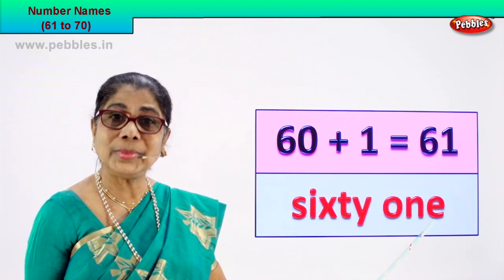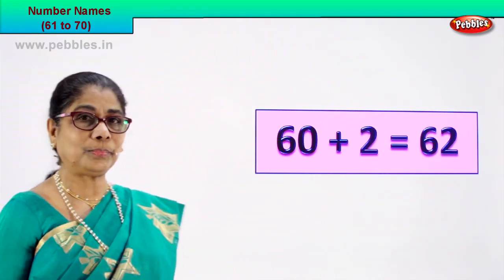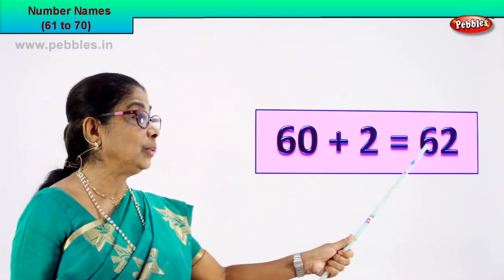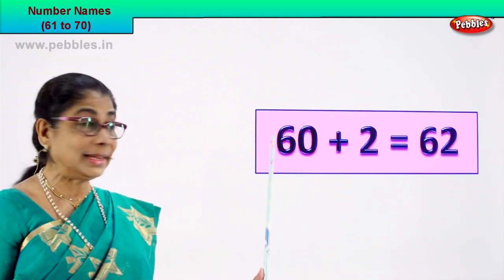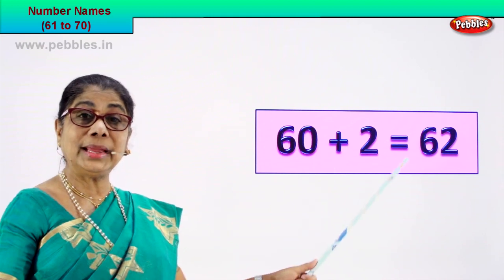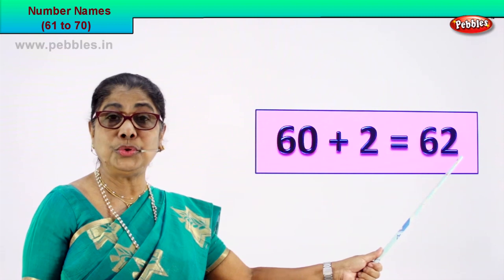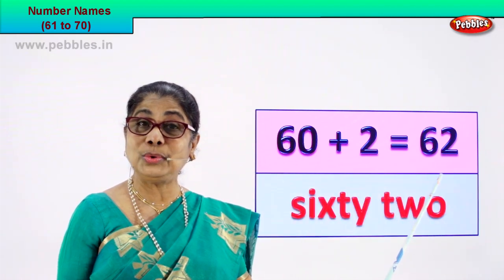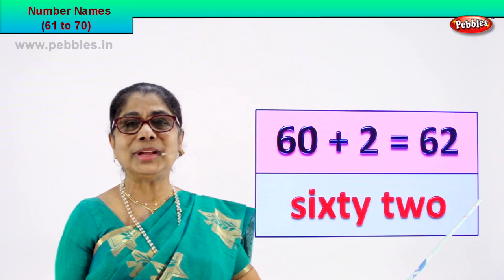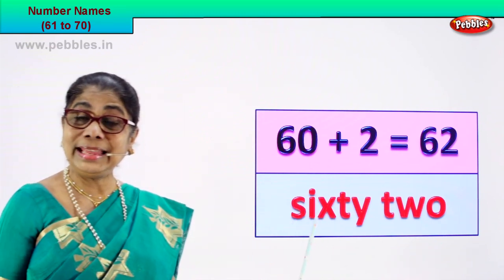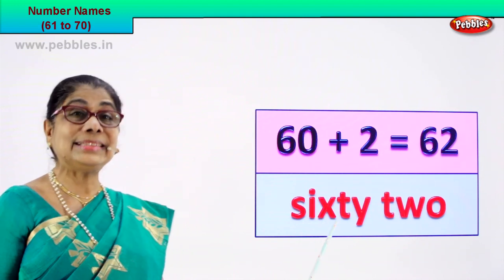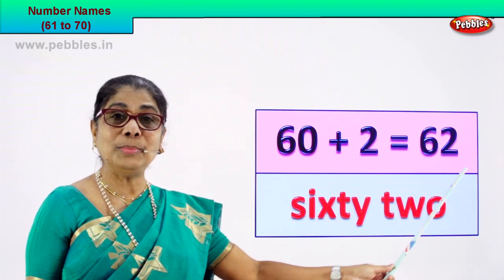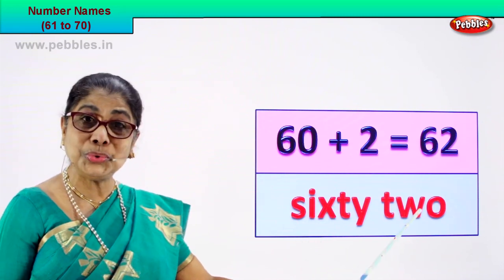Shall we take the next number and learn the number name? Look! 60 plus 2 is equal to 62. 6 and 2, 62. That's the numeral. Now how do we write the name of 62? Spell and write. You know the 60 spelling — just add 2. S-I-X-T-Y, and T-W-O. 62 is the numeral and the name is sixty-two.